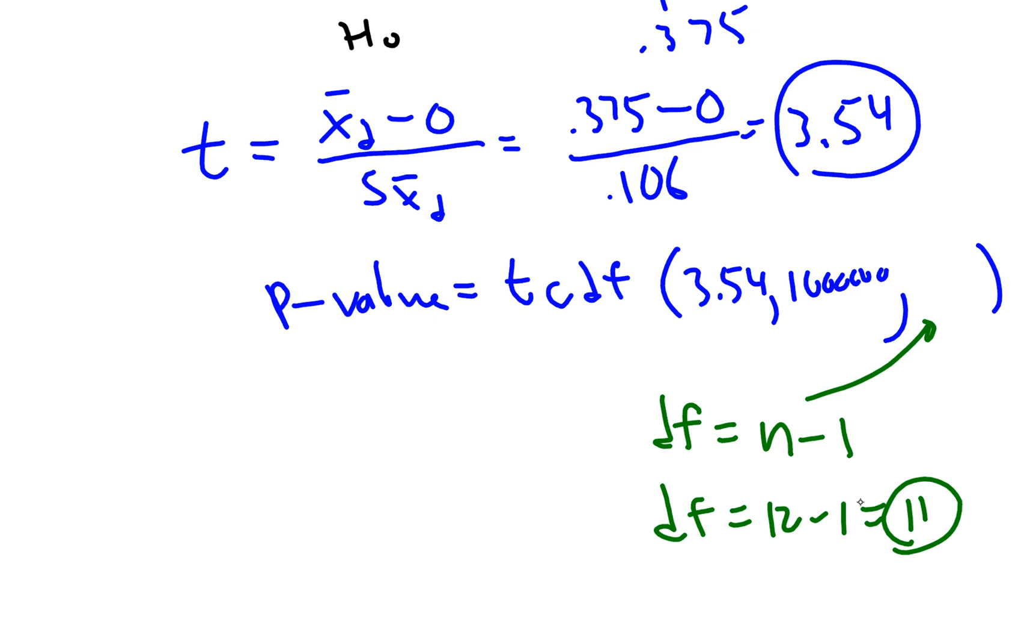We're just about ready now. Second distributions, number 6, TCDF. Second distribution, by the way, is above the VARS key. 3.54 for the lower. The upper is just a huge number. I put 1 with a whole bunch of zeros. My degrees of freedom are going to be 11. I'm going to hit paste.